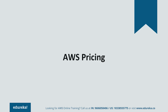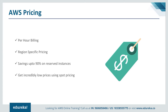AWS has a global presence so that your customers can have the lowest latency possible and you can implement the best disaster recovery measures. Now let's talk about AWS pricing. We have a per-hour billing system, and the pricing is also region-specific — each region has different pricing for different services. They don't differ much, but you can choose a region according to your preference. There are also reserved instances, where you save up to 90% costs by renting a server for a particular term — say a one-year or three-year term — compared to on-demand pricing.